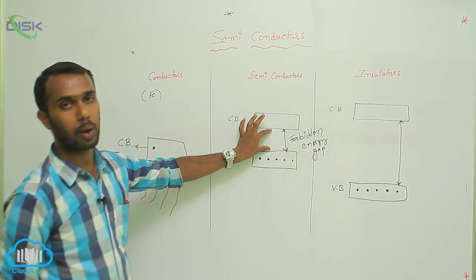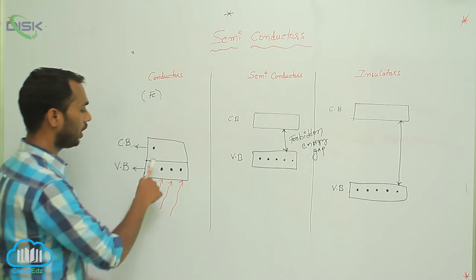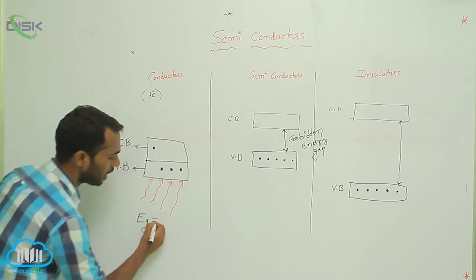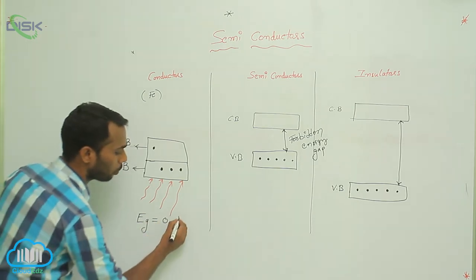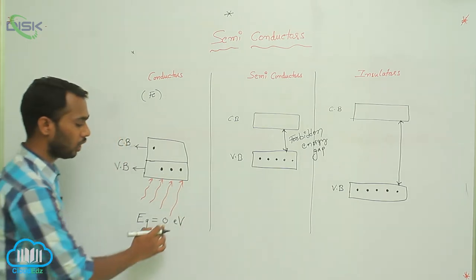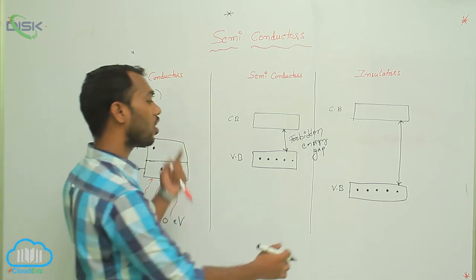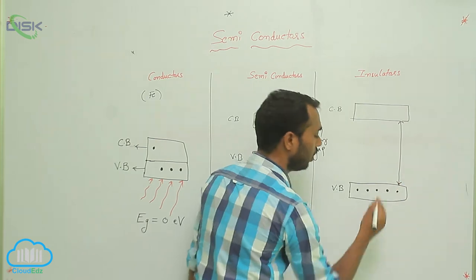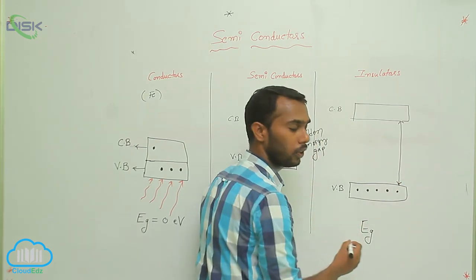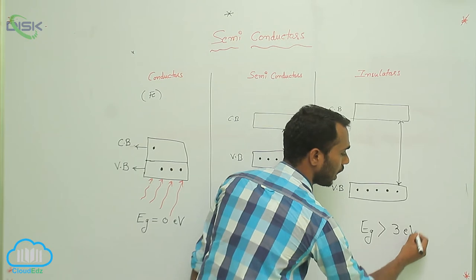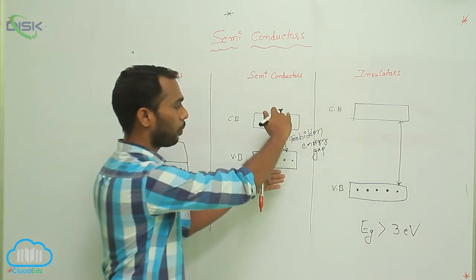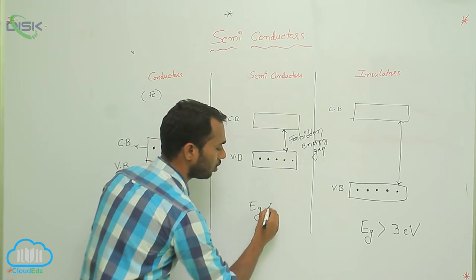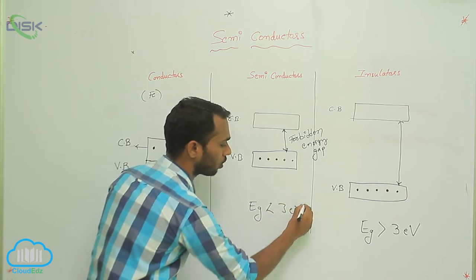We have to measure in electron volts. The forbidden energy gap for conductors is zero electron volts. For insulators, this gap is more than three electron volts. For semiconductors, the forbidden energy gap is less than three electron volts.